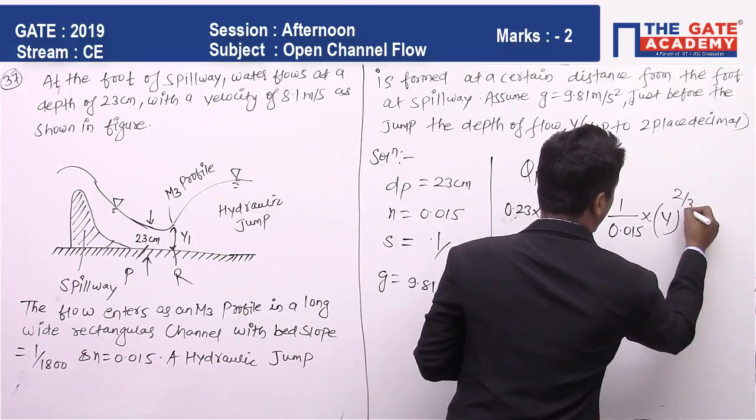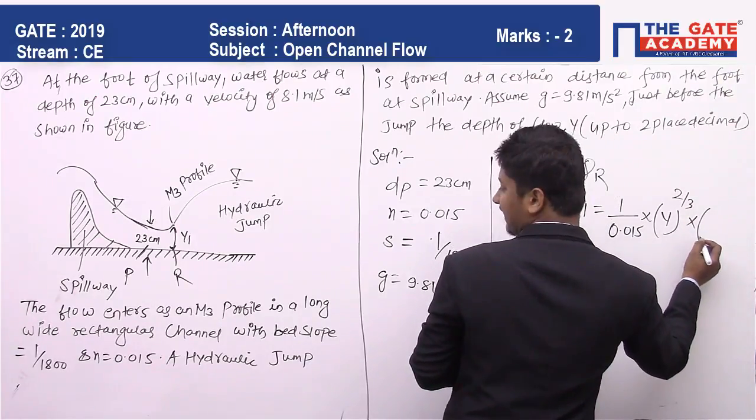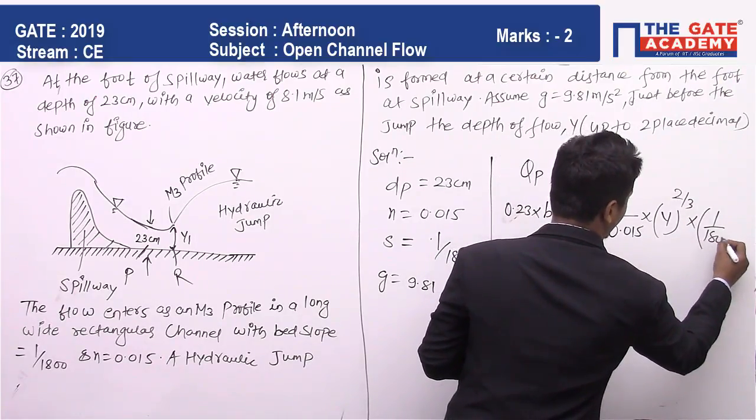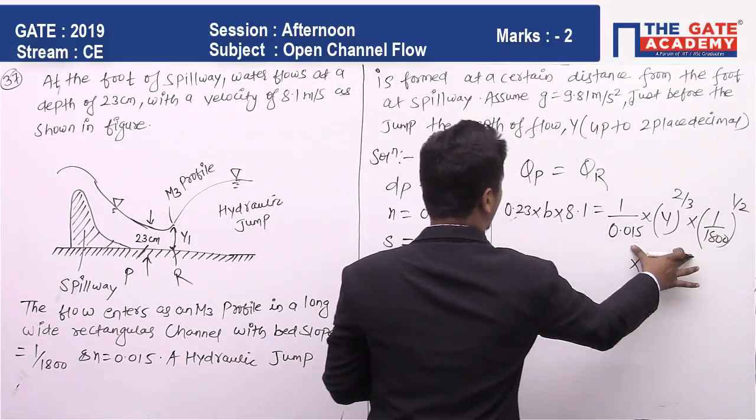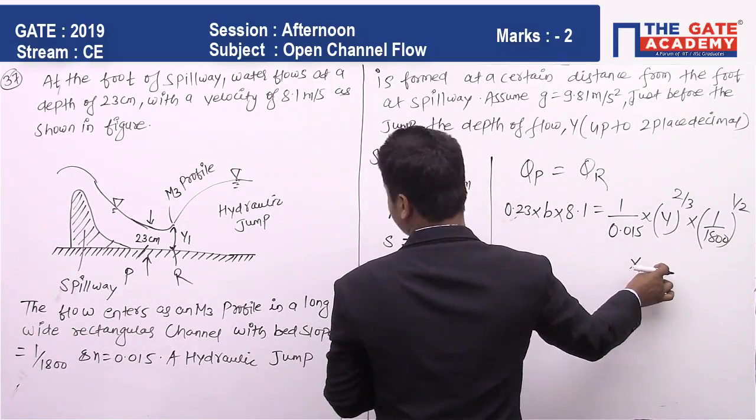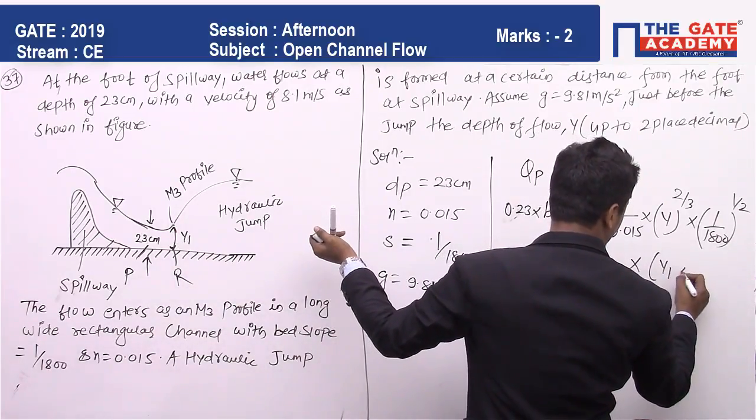So it's Y^(2/3) × S is given as (1/1800)^(1/2). This is all about velocity. What about the area? That will be Y1 × B.